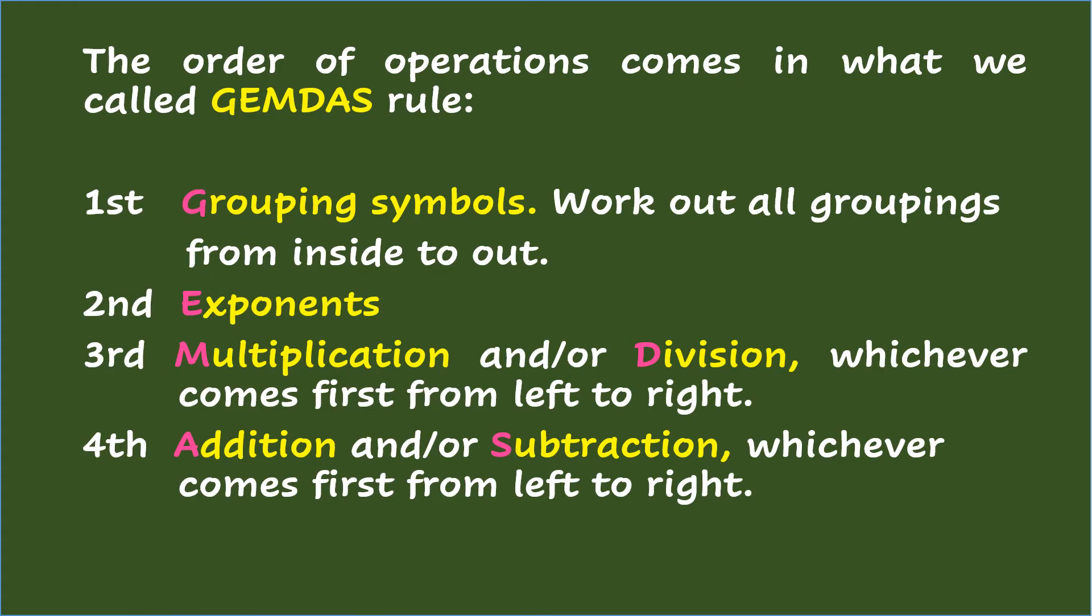The order of operations comes in what we call the GEMDAS Rule. First is G, which stands for grouping symbols. Work out all groupings from inside to out. Second is E, which stands for exponents. Third is M and D, which stands for multiplication and or division, whichever comes first from left to right.